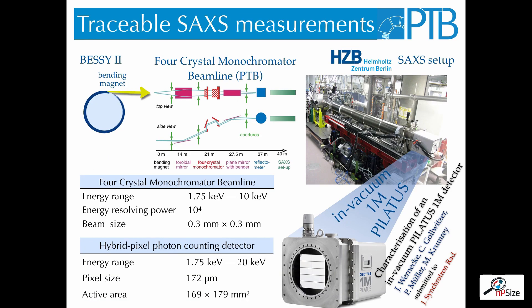In Berlin-Adlershof, the PTB operates multiple beamlines at the synchrotron radiation facility BESSY-II. At one of these beamlines, the four-crystal monochromator beamline, the PTB can, together with the HZB SAXS setup, perform SAXS measurements in a photon energy range from 1.75 keV to 10 keV.